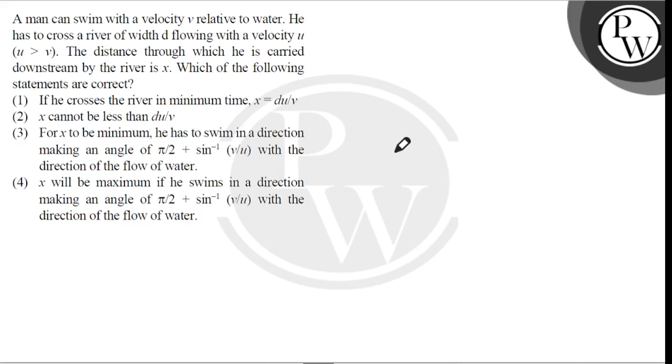Hello, let's read the question. Question says, a man can swim with a velocity V relative to water. He has to cross a river of width D flowing with a velocity U, where U is greater than V.